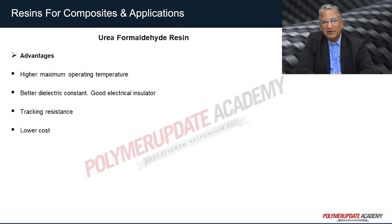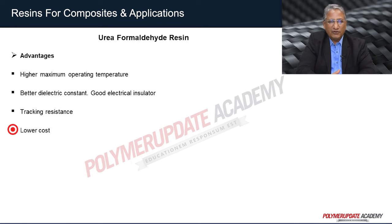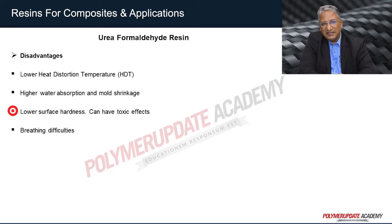Advantages of urea formaldehyde resin include higher maximum operating temperature, allowing molding at higher temperatures. It also has better dielectric constant, giving good electrical insulating properties, and good tracking resistance, making it useful in electrical appliances at lower cost. Disadvantages include low heat distortion temperature (HDT), higher water absorption, shrinkage in the mold, lower surface hardness, and potential toxic effects including breathing difficulties.